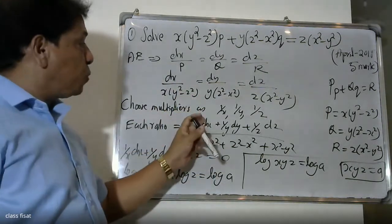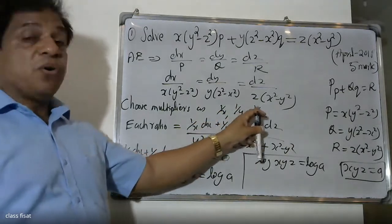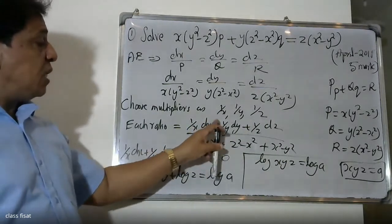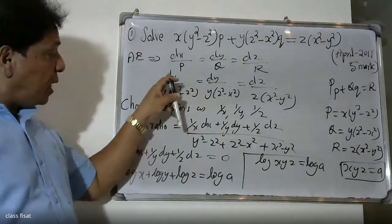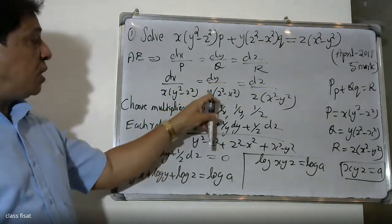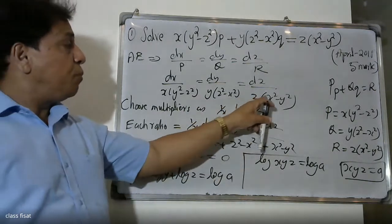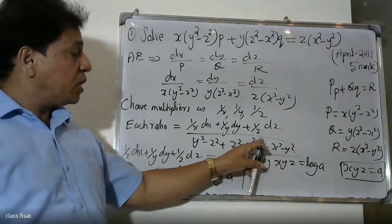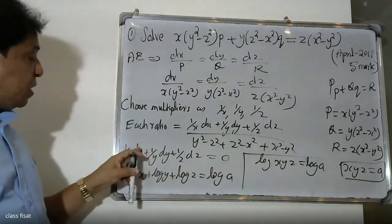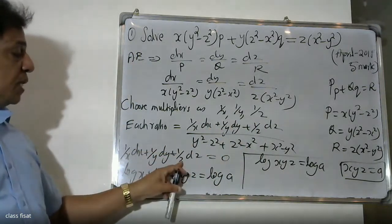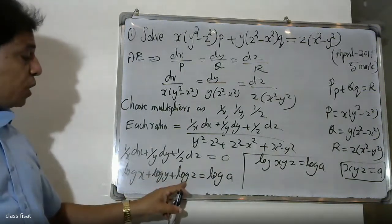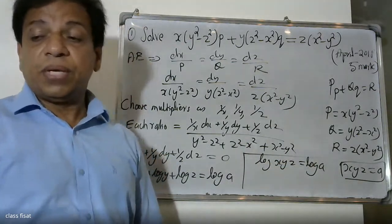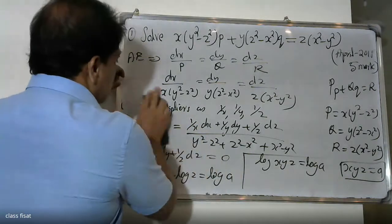The denominator simplifies: (y² - z²) + (z² - x²) + (x² - y²) = 0. Therefore we can write (1/x)dx + (1/y)dy + (1/z)dz = 0. Integrating gives log x + log y + log z = log a, therefore log(xyz) = log a, so xyz = a. This is our first constant.